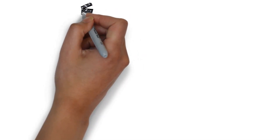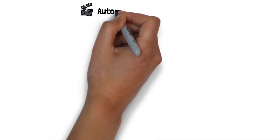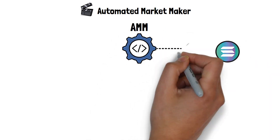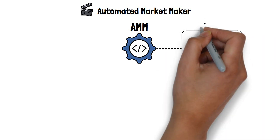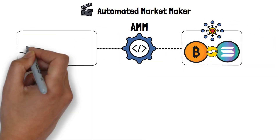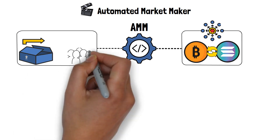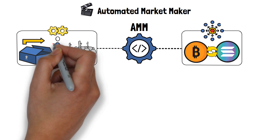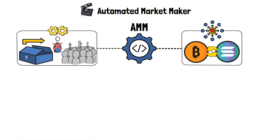Hey! In this video, we're going to cover what is an automated market maker. Automated market makers, also known as AMMs, are special, complex algorithms that are designed to help people trade certain cryptocurrency assets with decentralized crypto exchanges. These algorithms react to the supply and demand factors automatically, and allow traders to interact with them without needing another real person to be present on the other side of the trade.